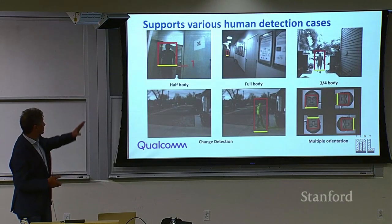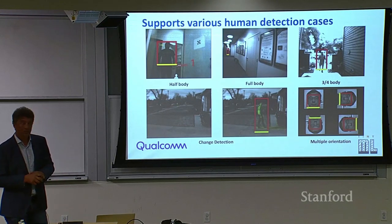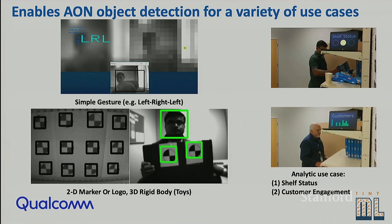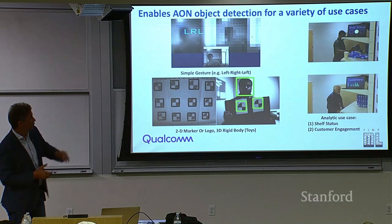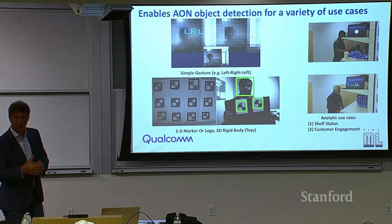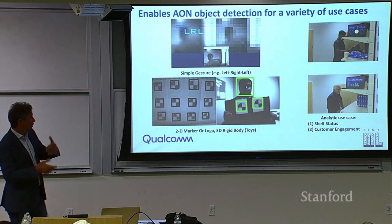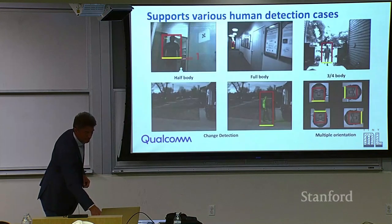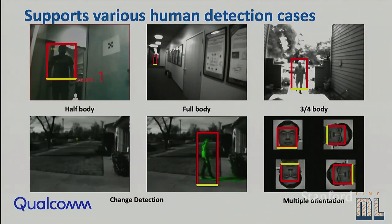These are real images from the device which we don't transmit — this is just for demonstration purposes. You can do human detection, face detection, logo detection. You can train models using standard machine learning techniques. For retail, you can do shelf status monitoring, customer engagement — measuring how long customers spend in front of a shelf in supermarkets. You can also do gesture detection. All of this at extremely low power, with everything happening in this small form factor. The output is just metadata — the digested result.